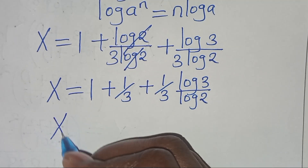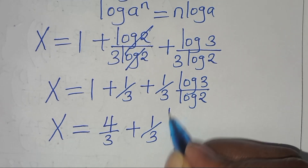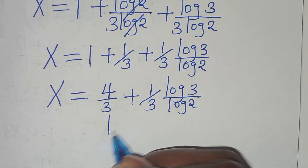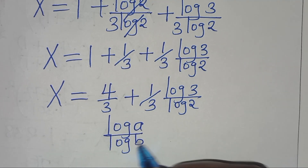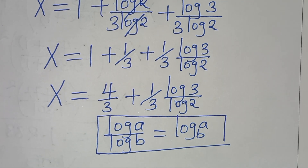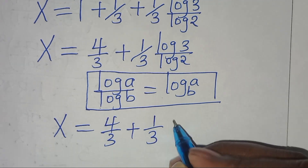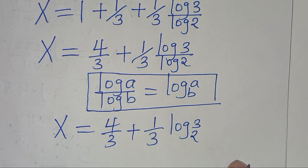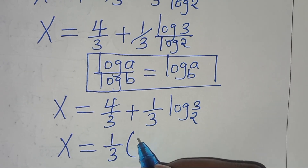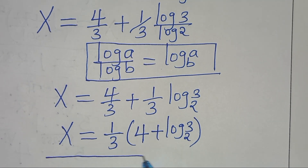We have x equals 1 plus 1/3, which is 4/3, plus (1/3)·log(3) divided by log(2). Now log(3) over log(2) is in the form log(a) over log(b), which equals log base b of a. Applying this property, x equals 4/3 plus (1/3)·log₂(3). Factoring out 1/3, x equals (1/3)·(4 + log₂(3)).